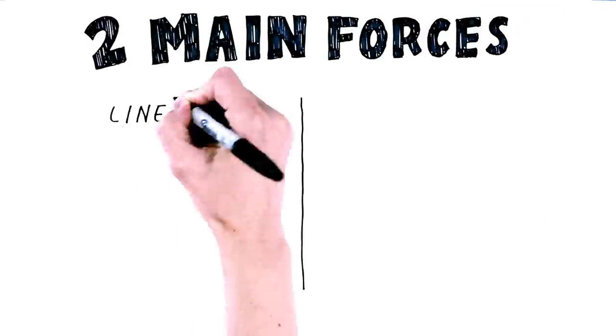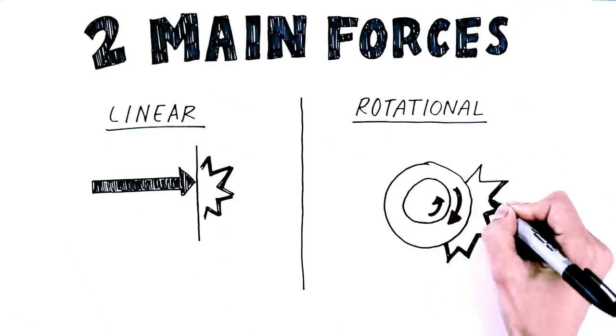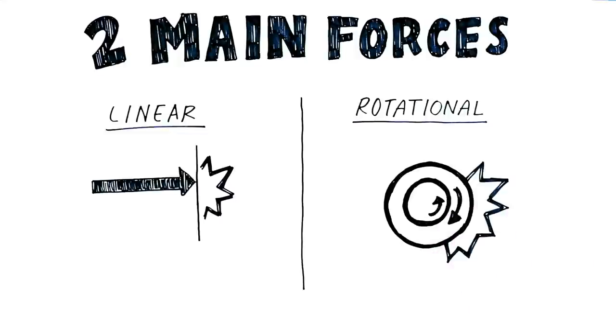Although no two crashes are identical, two main types of force, linear and rotational, are related to the majority of brain injuries. Most real-world impacts are actually a combination of both linear and rotational forces.